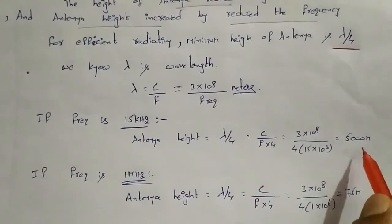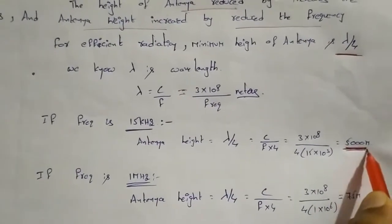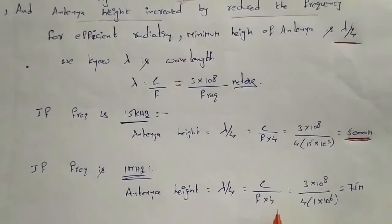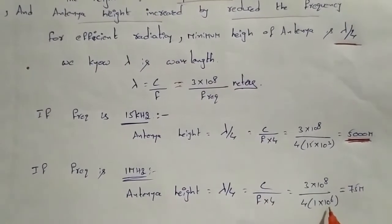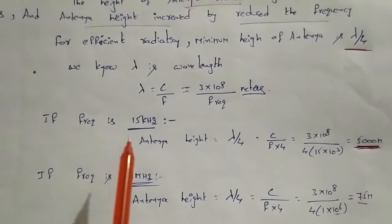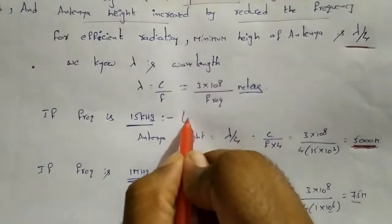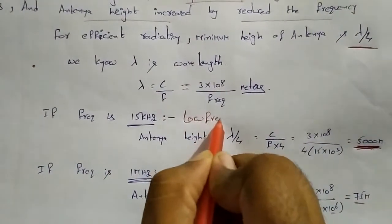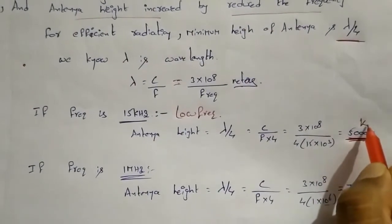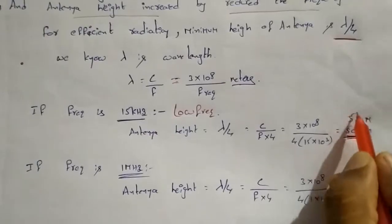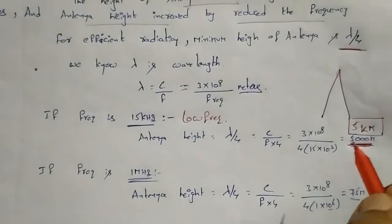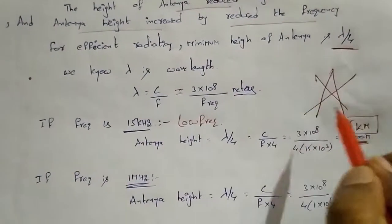So for 15 kilohertz, the required antenna height is 5000 meters. Now for 1 MHz frequency, the formula gives C divided by (F × 4), where MHz equals 10⁶. This gives only 75 meters. So at low frequency like 15 kHz, you need 5000 meters — which is clearly not possible.